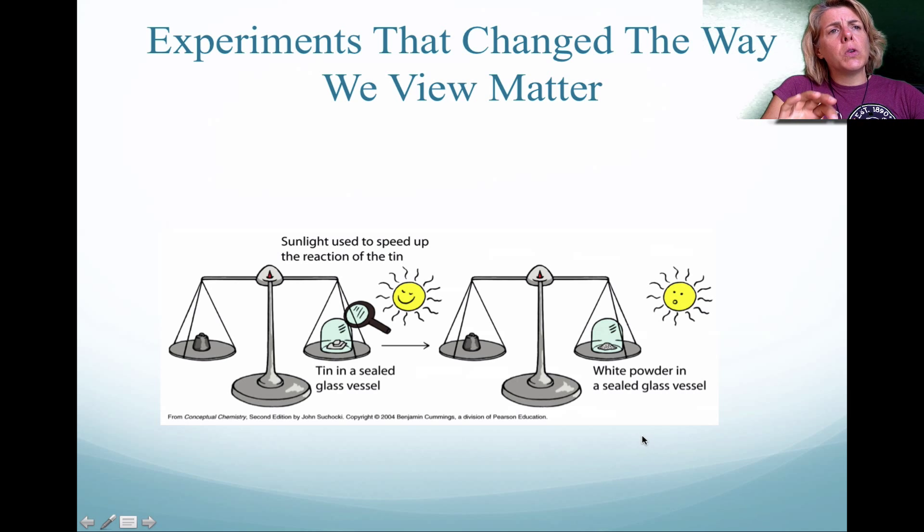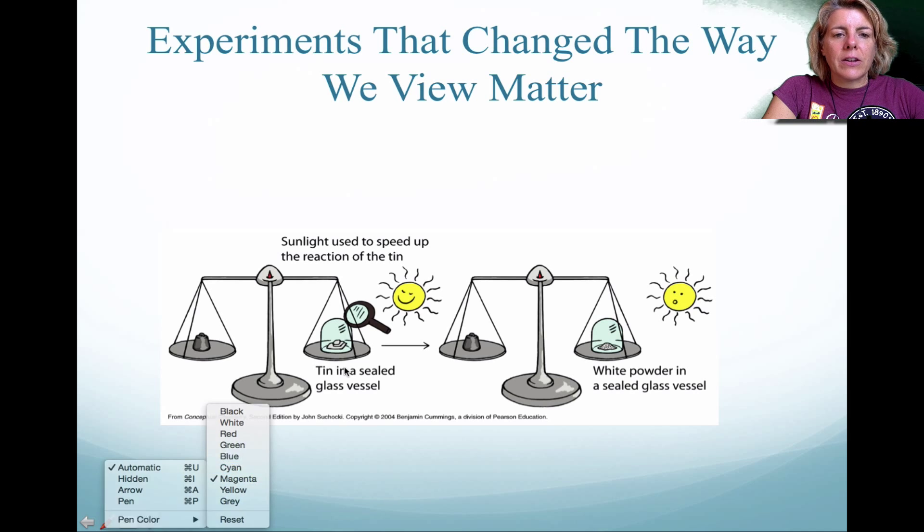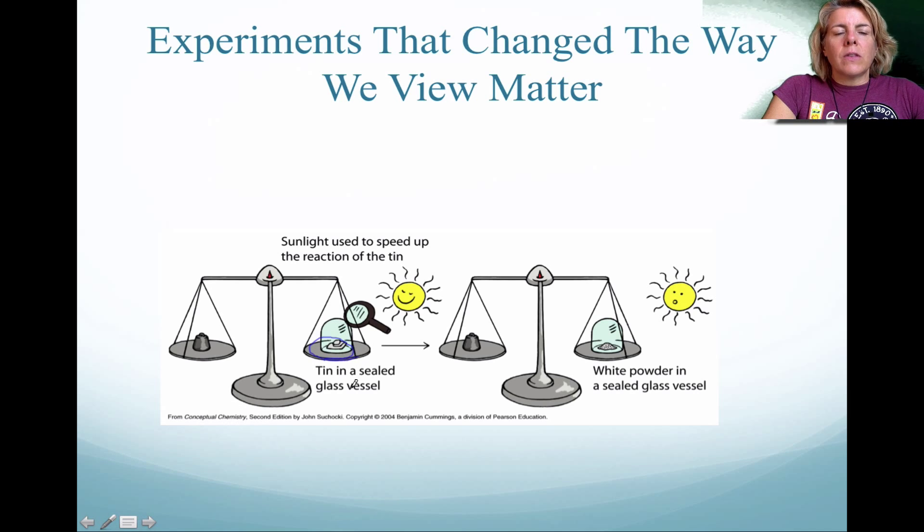Dalton essentially knew that matter would be rearranged, it didn't disappear. A man by the name of Lavoisier had done this experiment. He took a container and weighed it, and in that container, he put some tin. He took a magnifying glass in the sun and heated up the tin while it was in this closed container, keeping it on the scale. He noticed that after the tin had changed its substance, the mass did not change. So Dalton's atomic theory is supported by the conservation of mass.